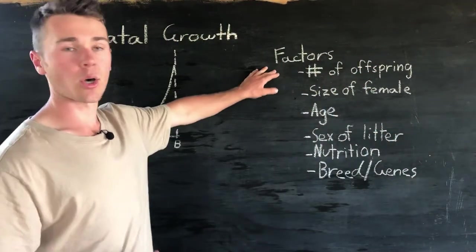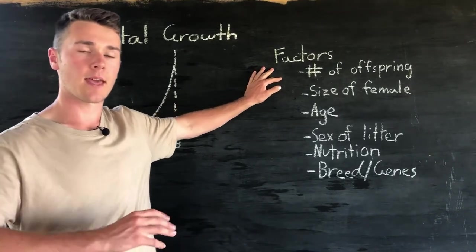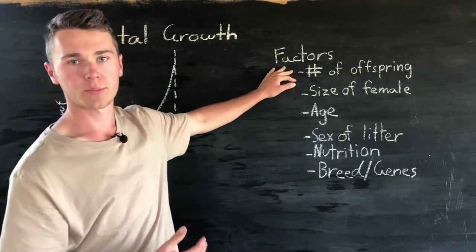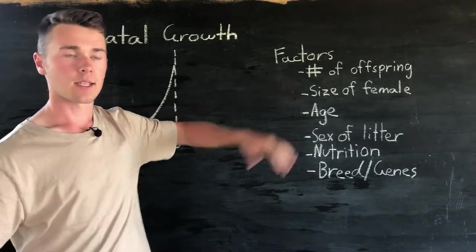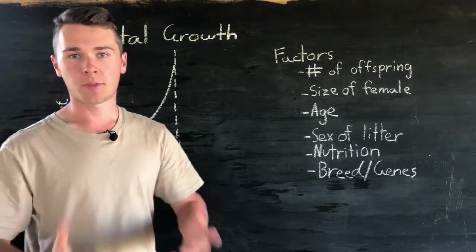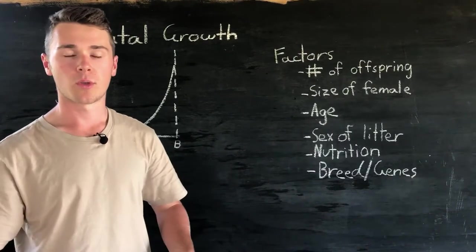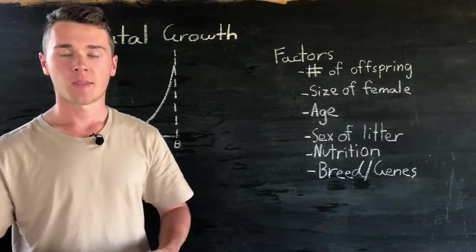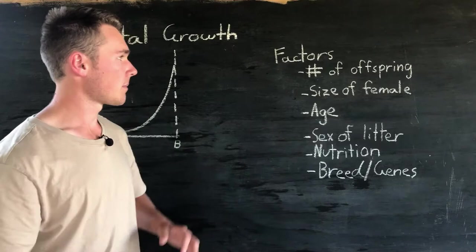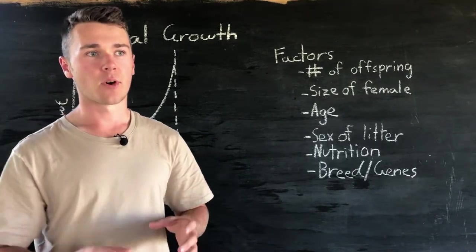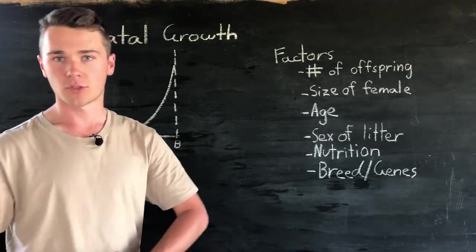The first factor is the number of offspring. Now it tends to be that an increase in the number of offspring results in a decrease in birth weight. If the mother has a hundred percent nutrients but spread across two offspring, the amount of nutrients divided amongst the offspring is going to be reduced.